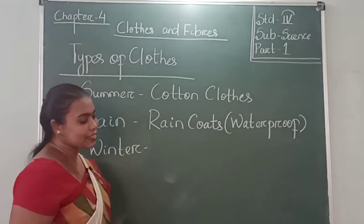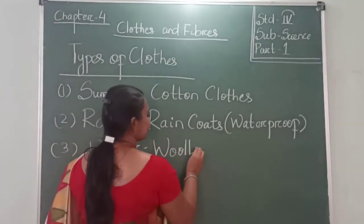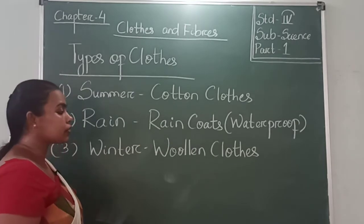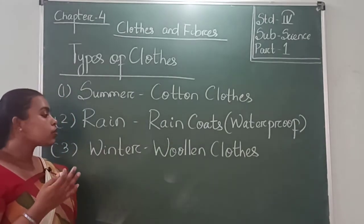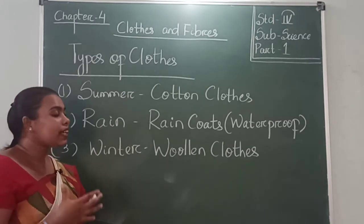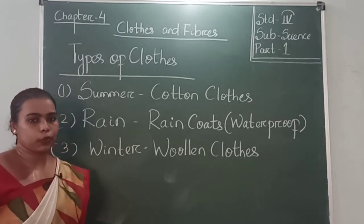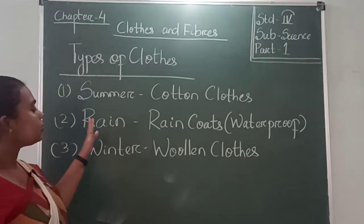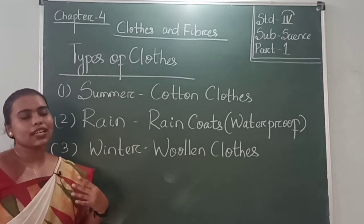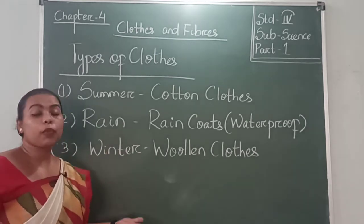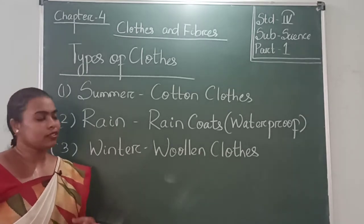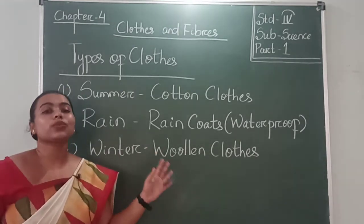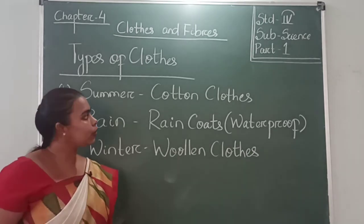In winter or cold days, we wear woolen clothes like sweaters, jackets, mufflers, scarves, socks, and hand gloves. Woolen clothes are warm in nature — they keep our body warm and don't let our body heat evaporate. In summer, cotton clothes absorb sweat and let body heat evaporate so we feel cool. In winter, woolen clothes keep our body warm.